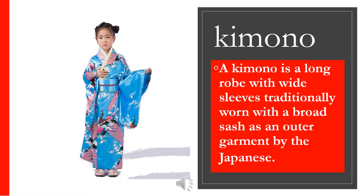Let's define each vocabulary word, viewing an example of each. Let's read them together, beginning with the word kimono. A kimono is a long robe with wide sleeves traditionally worn with a broad sash as an outer garment by the Japanese.